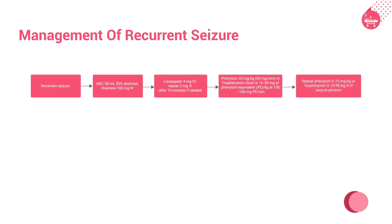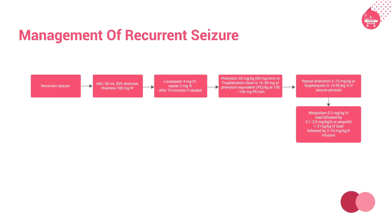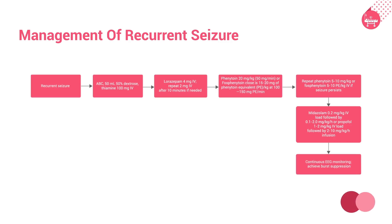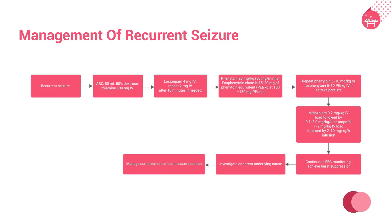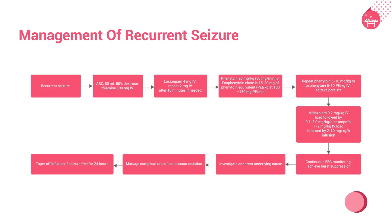If seizures persist, repeat phenytoin at 5 to 10 mg/kg, or fosphenytoin 5 to 10 PE/kg IV. Midazolam 0.2 mg/kg IV load followed by 0.1 to 2.0 mg/kg/hour, or propofol 1 to 2 mg/kg IV load followed by 2 to 10 mg/kg/hour infusion is administered. EEG is monitored continuously, the underlying cause is investigated and treated, complications of continuous sedation are managed, and the infusion is tapered if there are no seizures for 24 hours.